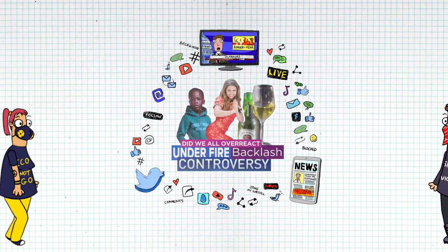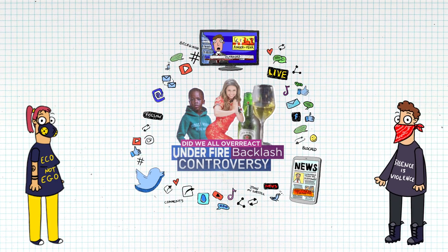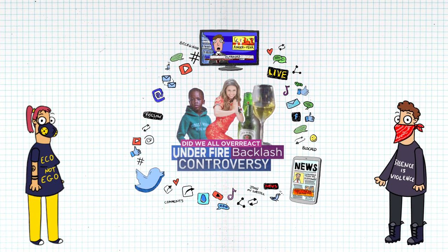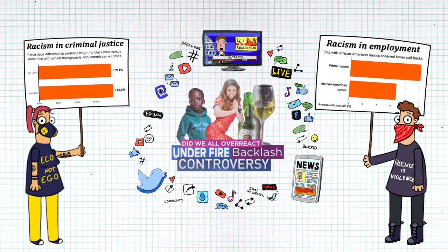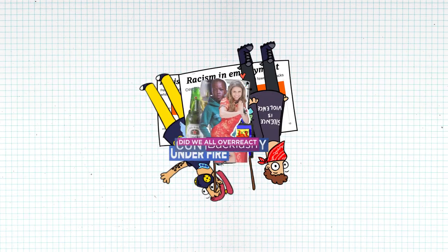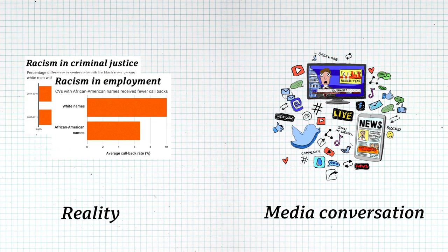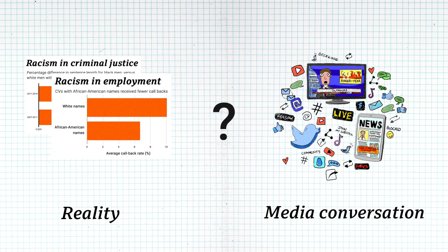For many of those who care about racism, this media conversation doesn't feel representative of the bigger issues. Instead of discussing prejudice in areas like employment or criminal justice, we're debating prom dresses. Ideally, we'd see some overlap between the media conversation and the reality of the issue. Instead, we have this gap. Why is this?